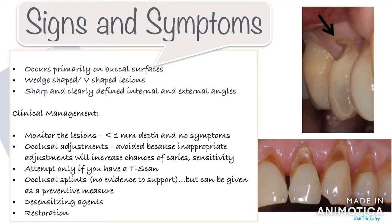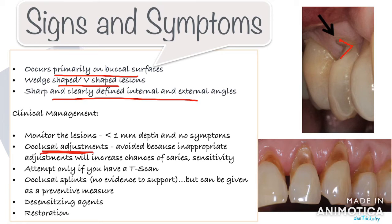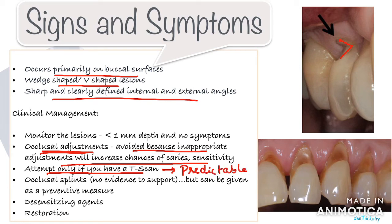Abfraction lesions are primarily present on the buccal or labial surfaces of the teeth. They are wedge-shaped or V-shaped lesions with sharp and clearly defined internal and external angles. Management depends on the extent of the lesion. When we suspect abfraction, our first instinct is occlusal adjustment — but I would suggest avoiding that, because inappropriate adjustments will increase the chances of caries, sensitivity, or aggravate the condition. Attempt occlusal adjustment only if you have a T-scan, because that will give you an accurate occlusal analysis. Occlusal splints can be given, though there is no strong evidence to support their use for abfraction lesions; they can be given as a preventive measure.